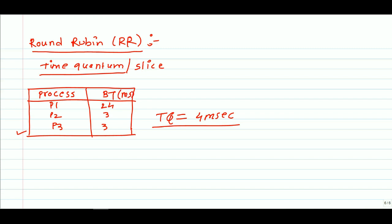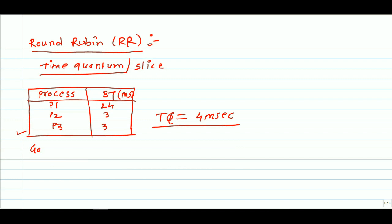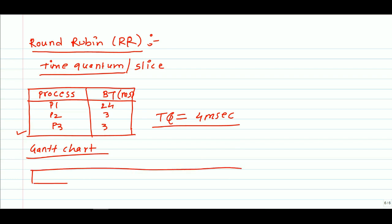If we draw a Gantt chart, we have to allocate the time quantum to every process. Starting from zero, P1 will get CPU access for only 4 milliseconds. After this, P2 process will get access to the CPU.